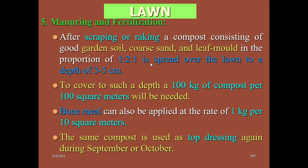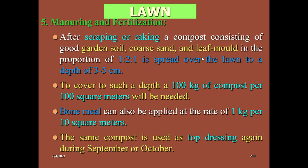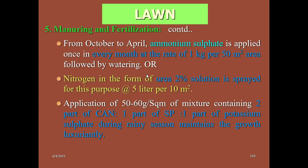For manuring and fertilization — scraping and raking is done in the lawn to create aeration. After scraping and raking, we go for top dressing with garden soil, coarse sand, and leaf mold in a ratio of 1:2:1. This is very important — top dressing in lawn is done in the ratio 1:2:1 of garden soil, coarse sand, and leaf mold.